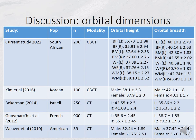Comparing the orbital dimensions of South Africans to other population groups, South Africans presented with large, more rectangular orbits, with Americans having the smallest orbits. The orbital dimensions of white South Africans were similar to what was reported in a Korean sample.